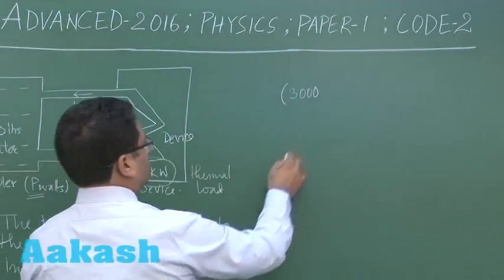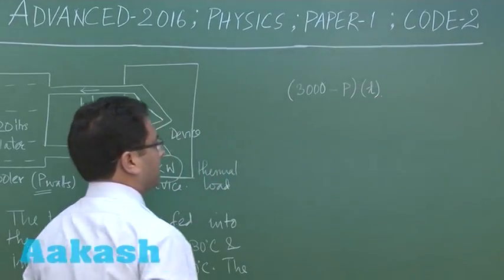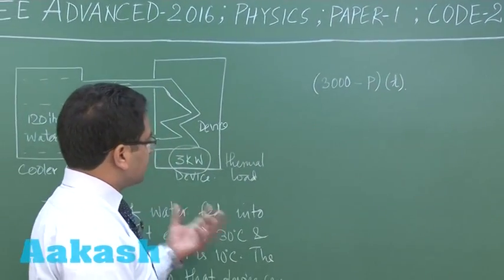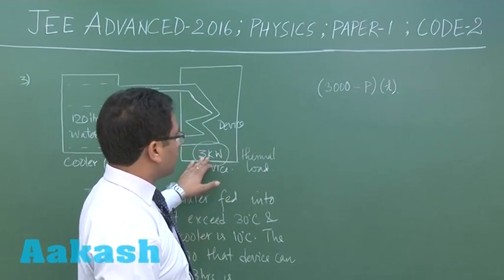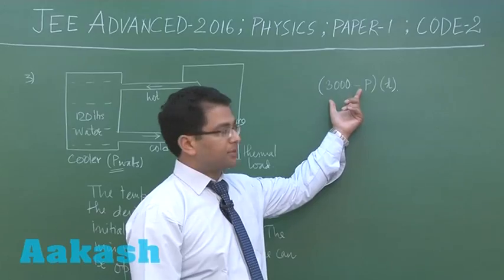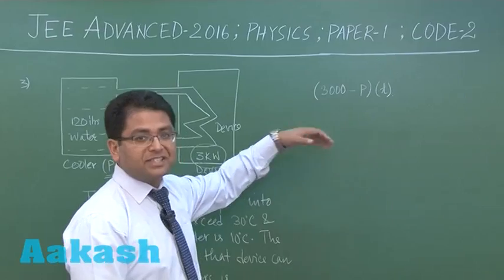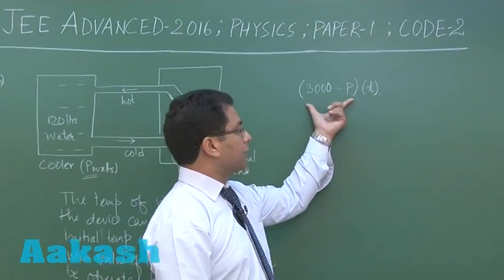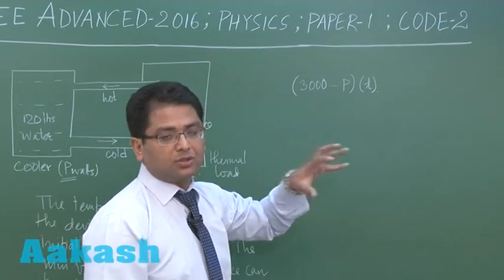3000 (because it's in kilowatts) minus P, multiplied by time. The 3 kilowatts is increasing the temperature while P is decreasing it, so this is the net rate. The rate of increase of internal energy times t gives the total energy.